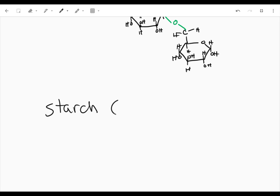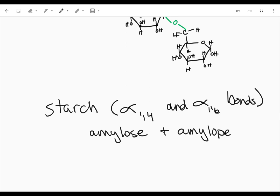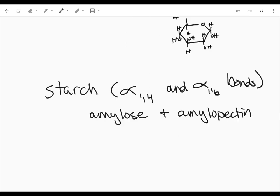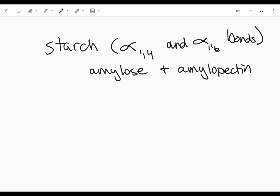So we're going to have alpha 1-4 and alpha 1-6 bonds—so that's amylose and amylopectin. And this is still through dehydration synthesis, so it's the same exact process.